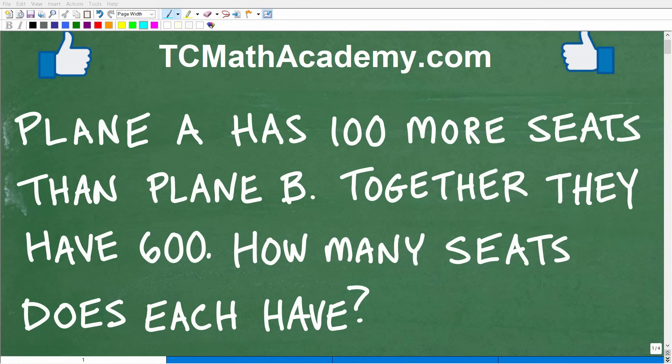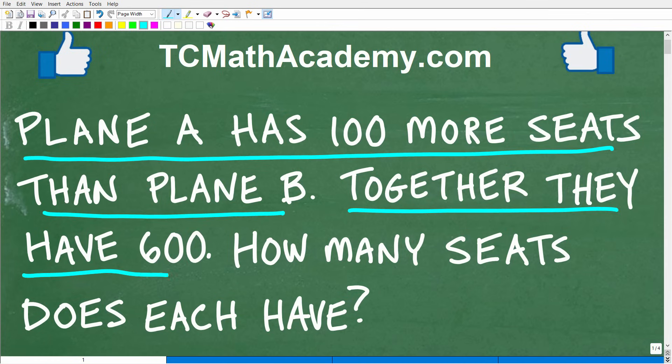Okay, so get ready to put your math skills to work to solve this interesting little math word problem. Let me go ahead and read the problem. Plane A has 100 more seats than plane B. Together they have 600 seats. How many seats does each plane have?